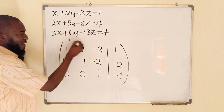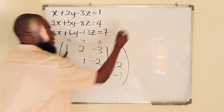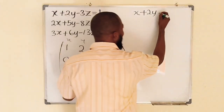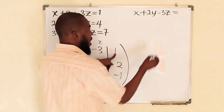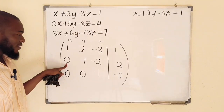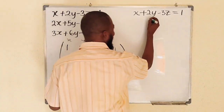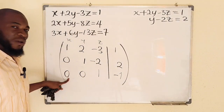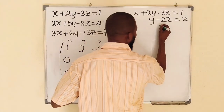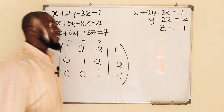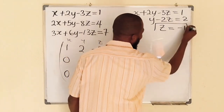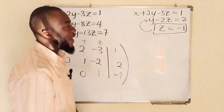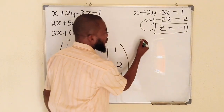Reading the matrix as equations — where columns represent x, y, z — we get: 1x + 2y − 3z = 1; 0x + 1y − 2z = 2; 0x + 0y + 1z = negative 1. So we can see directly that z equals negative 1. This is what we call back substitution.